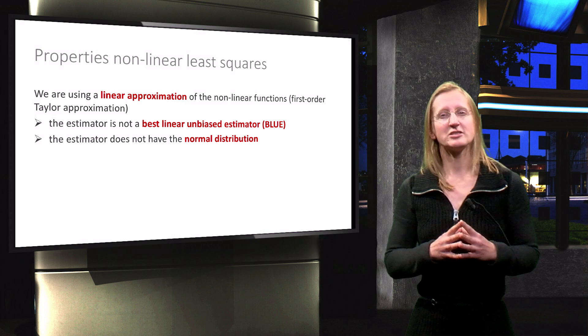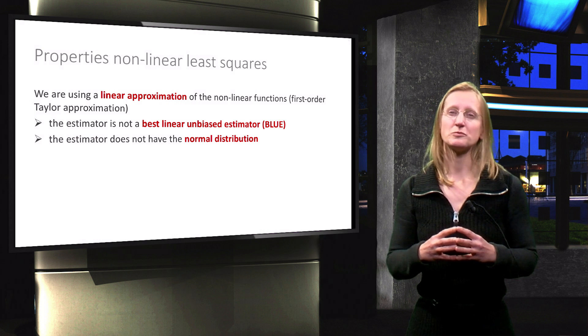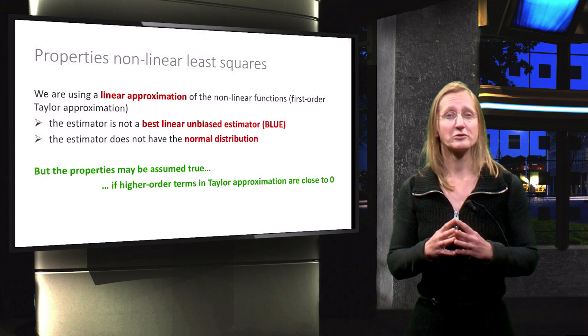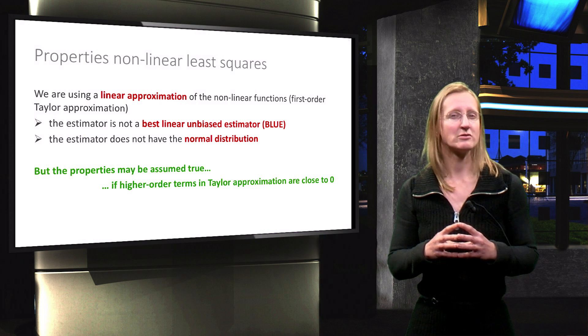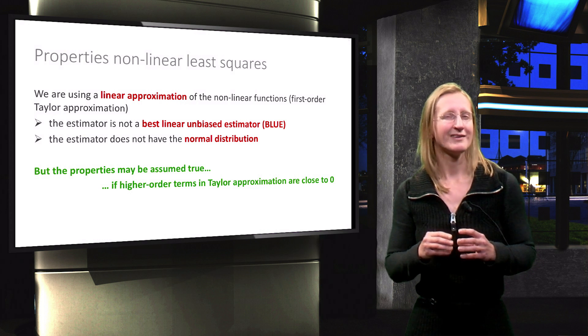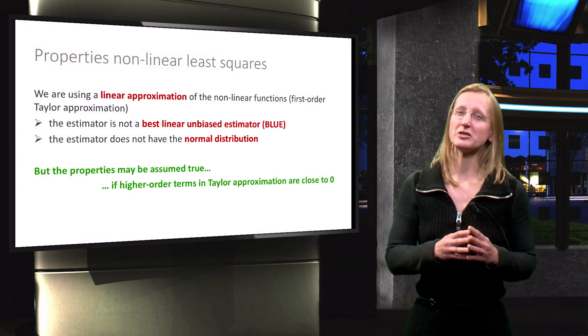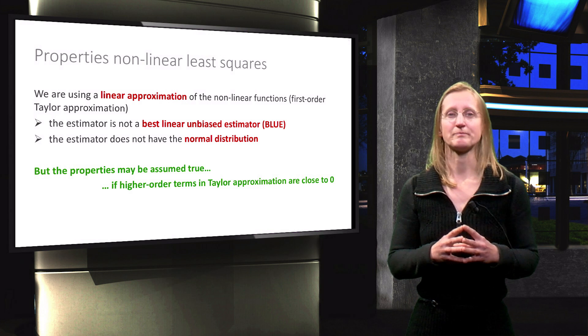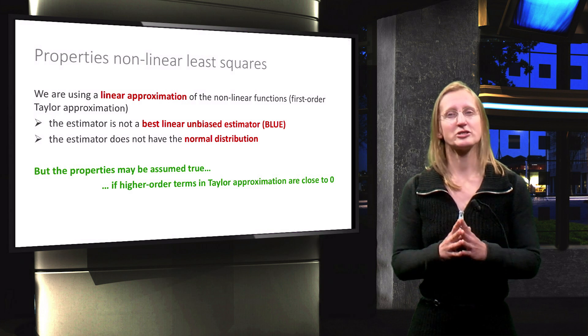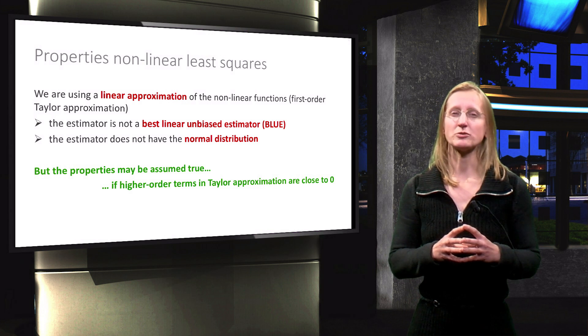In practice though, these important properties can still be assumed to be valid if the higher order terms in the Taylor approximation are close to zero. In other words, when the linear approximation is a very good approximation in the vicinity of x. This turns out to be true in many estimation problems.